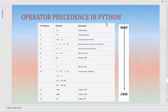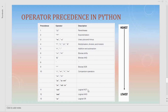Now let's look at operator precedence — which operator is evaluated first and which later. In mathematics you have heard of BODMAS. Similarly in Python and any programming language there is a defined precedence. Highest to lowest: parentheses first, then exponentiation, then unary plus and minus, then multiplication, division and modulo, then addition and subtraction, then bitwise shifts, then bitwise AND, and so on.